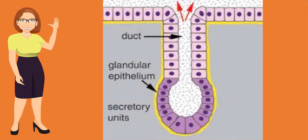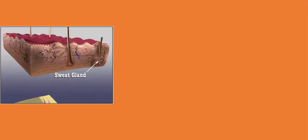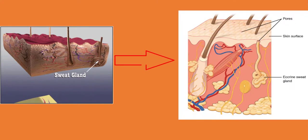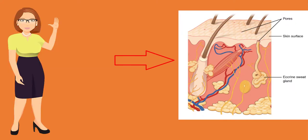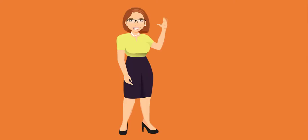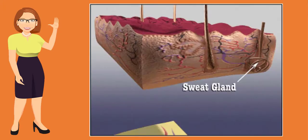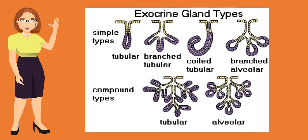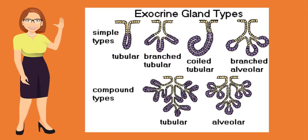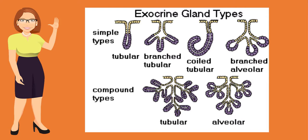Exocrine glands are the glands that secrete chemical substances into ducts that help in releasing the secretions. Most of these glands release secretions to the outside of the body, whereas others release secretions onto a surface still within the body. These glands synthesize and secrete their products onto a surface directly or via a tube or duct, which is why they are known as exocrine glands. Some ducts are known to modify the secretions.